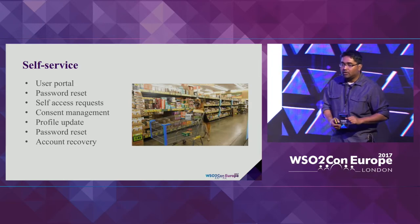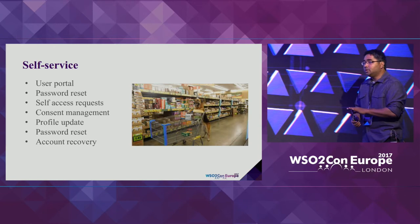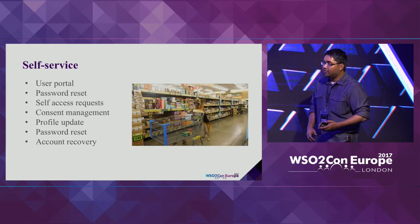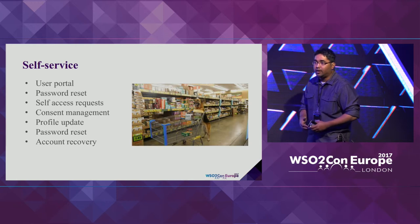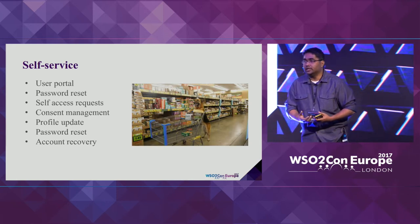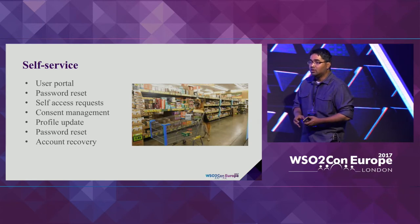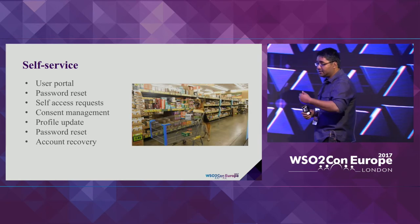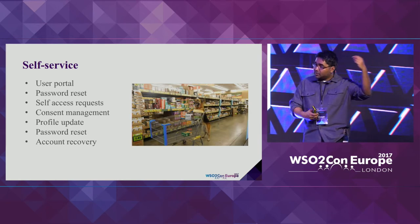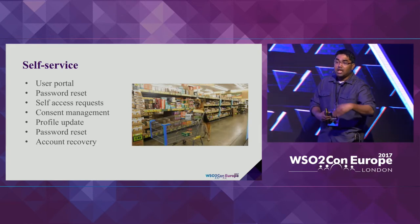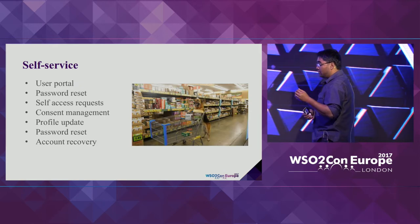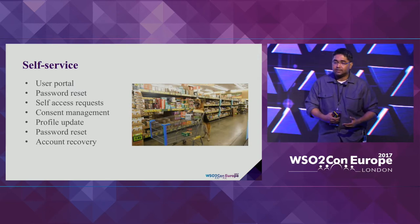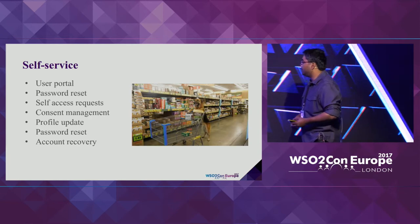An important change we are working on for IS 5.5.0 is adaptive authentication through policies. Rather than writing Java code to change the flow, we will let you write those configurations in JavaScript in the management console itself. For example, you can say: if the request comes from an internal IP, use username and password; if from an external IP, use username and password plus FIDO. And if the user's role is admin, require multi-factor authentication; for everyone else, just username and password. You can define very complex solutions in a simple, programmatic model.